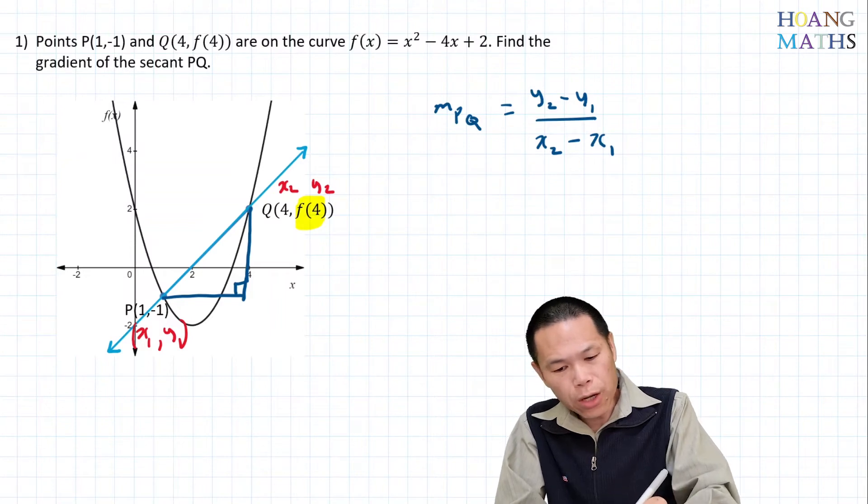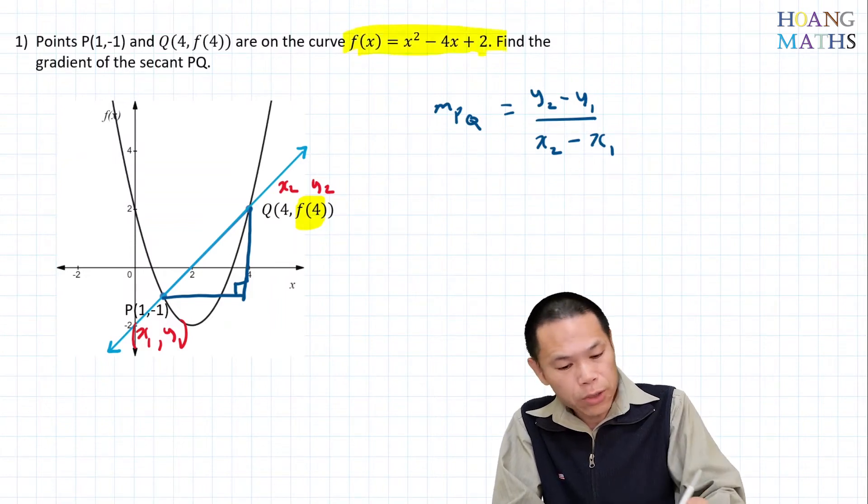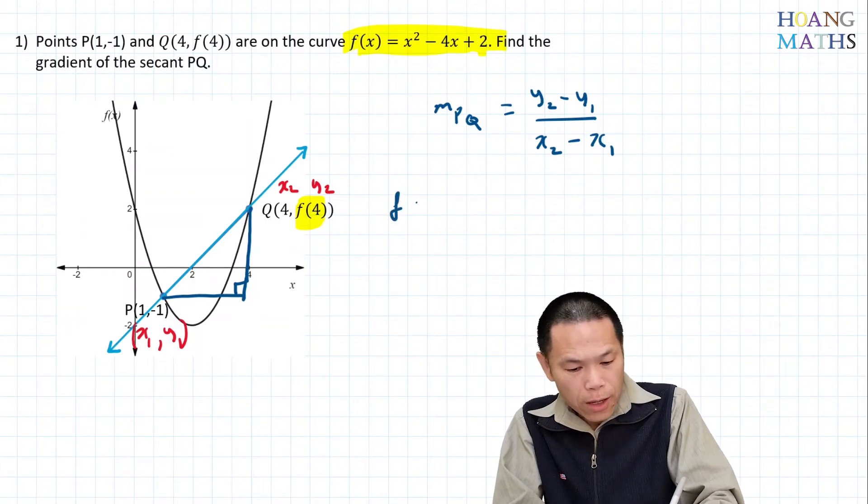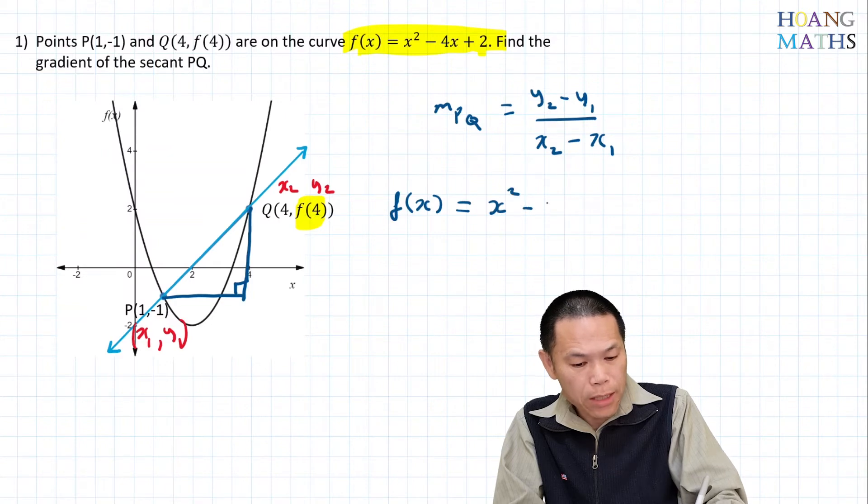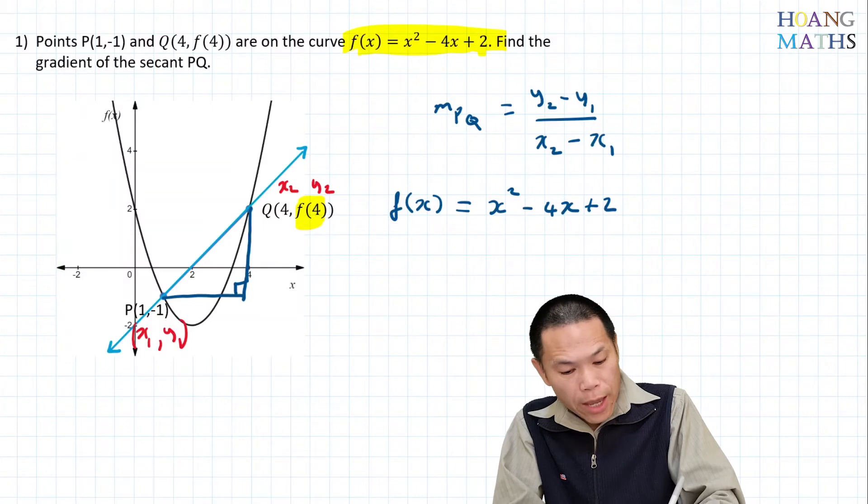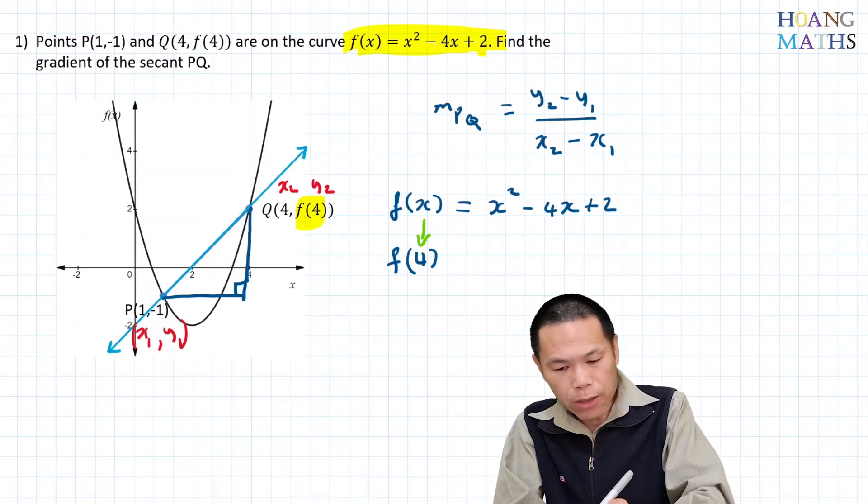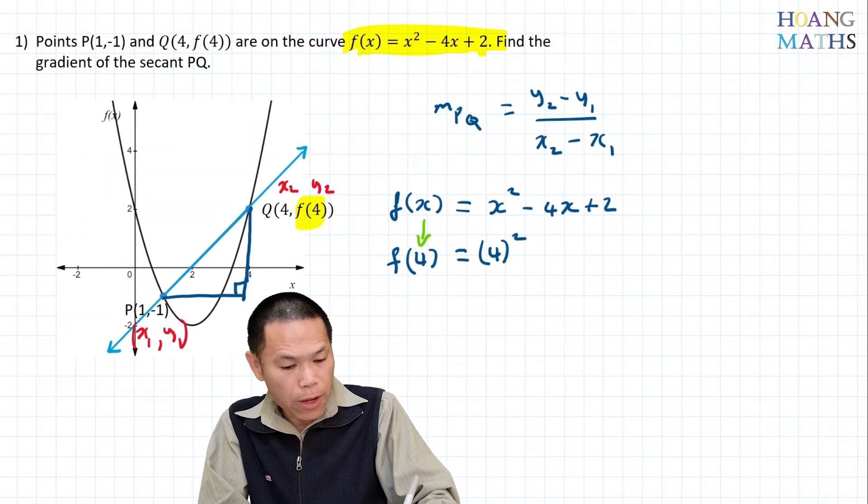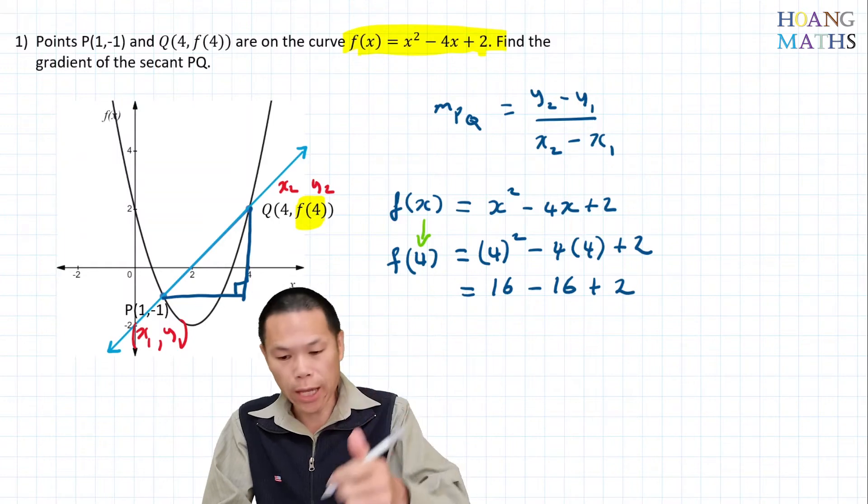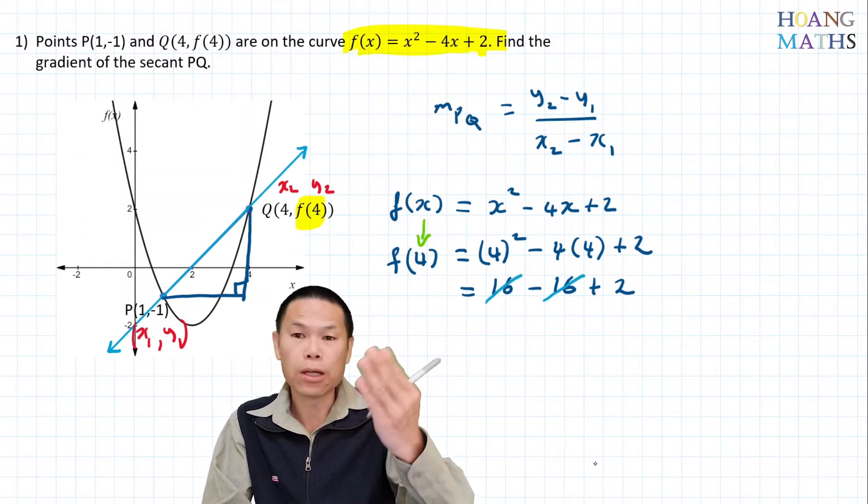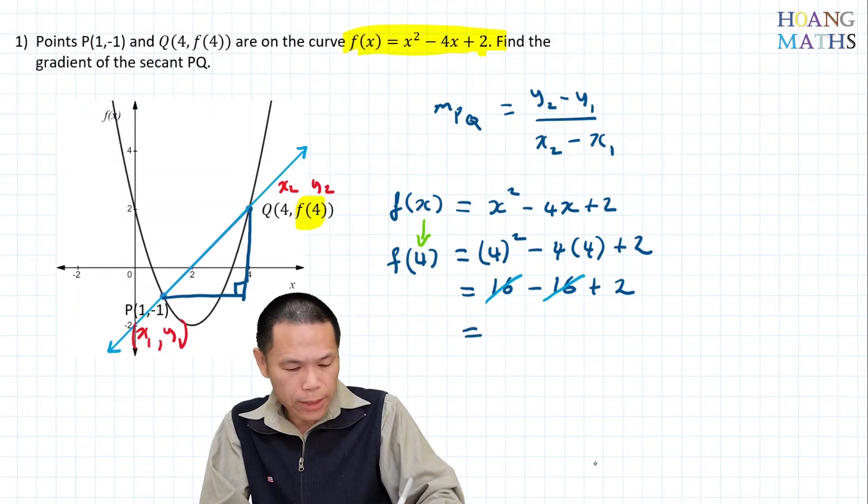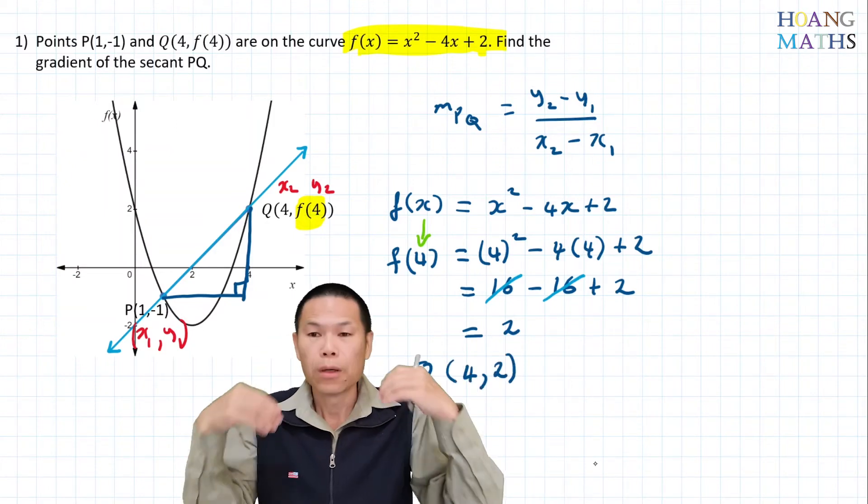We know that f(x) = x² - 4x + 2. Therefore, f(4) equals 4² - 4(4) + 2. That's 16 - 16 + 2, which equals 2. Therefore, point Q is (4, 2).